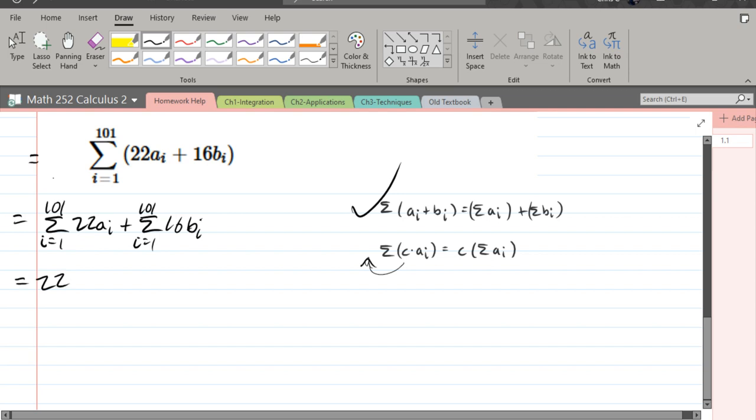So we'll do 22 brought outside the summation. I equals 1 to 101 of AI, plus summation I equals 1 to 101. Oh, totally forgot to do what I said I was going to do. Let's bring the 16 out front. I equals 1 to 101, BI.